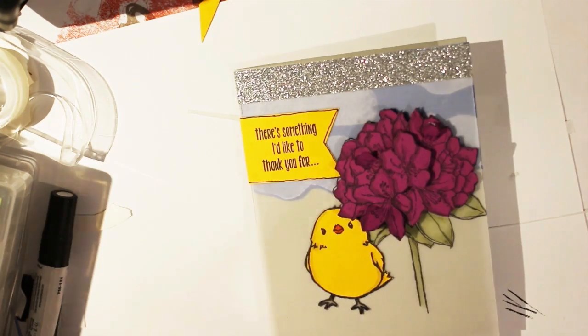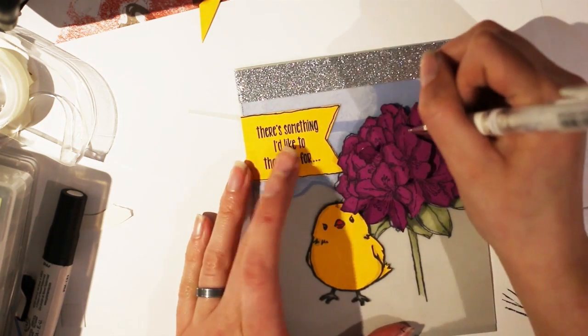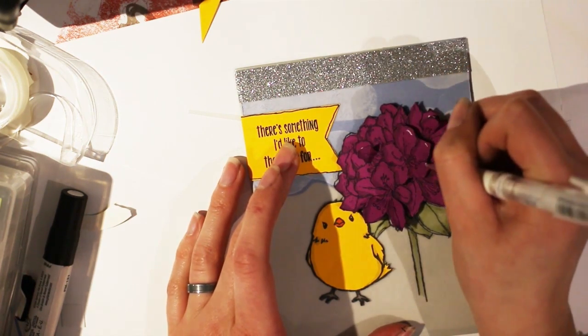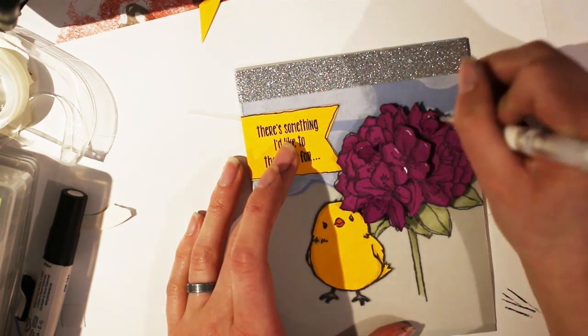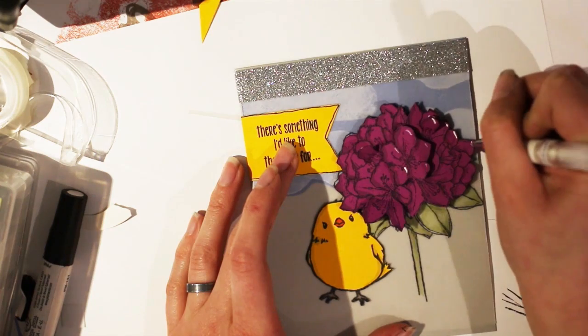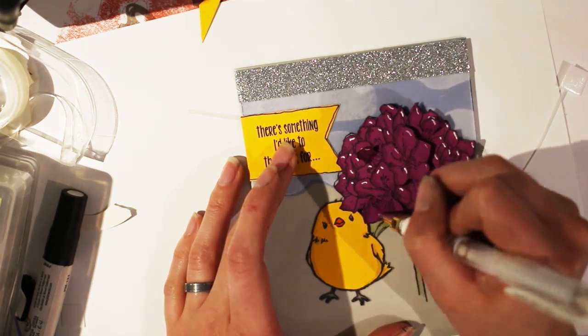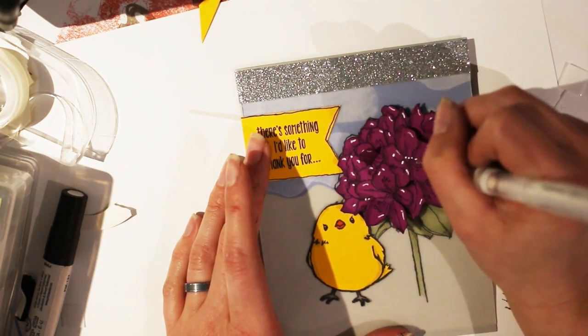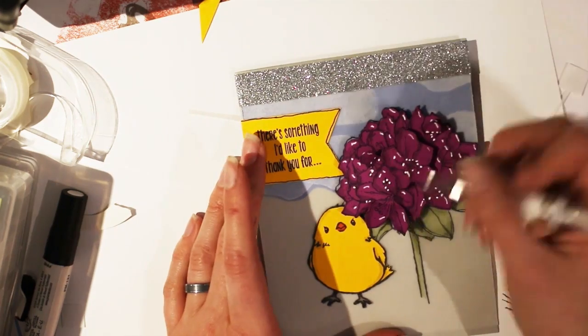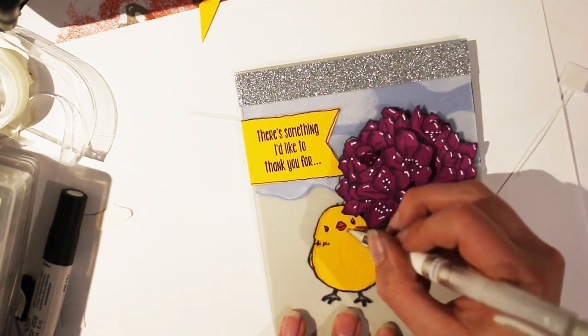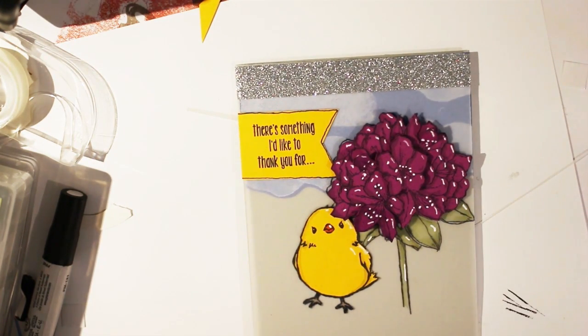So this is a white gel pen. I bought it through Stamping Up. I'm just going to add random highlights on all of the petals. I have done this. Well done.